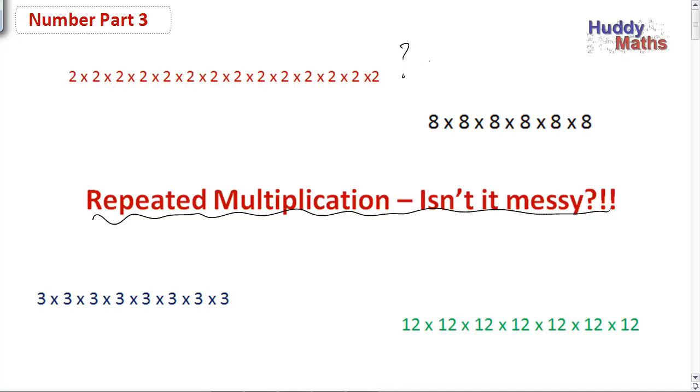Two by two all that many times, eight by eight by all that many times. This is a very messy way of writing down a lot of numbers all the same that are multiplied together. Is there a better way?